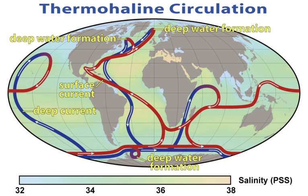The pH is expected to reach 7.7 by the year 2100. An important element for the skeletons of marine animals is calcium, but calcium carbonate becomes more soluble with pressure, so carbonate shells and skeletons dissolve below the carbonate compensation depth. Calcium carbonate becomes more soluble at lower pH, so ocean acidification is likely to affect marine organisms with calcareous shells, such as oysters, clams, sea urchins and corals, and the carbonate compensation depth will rise closer to the sea surface.